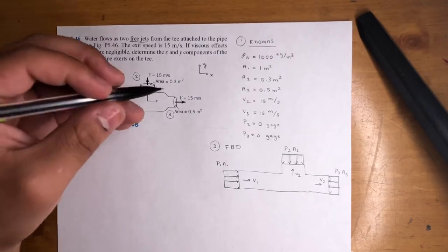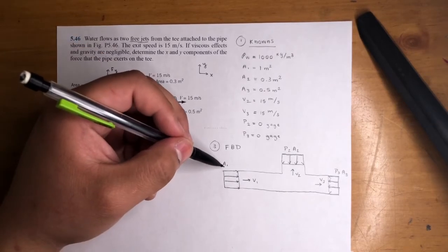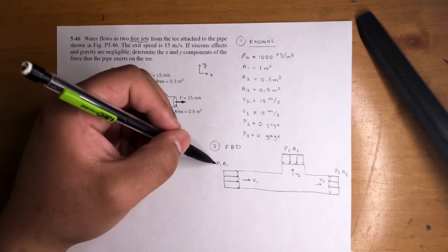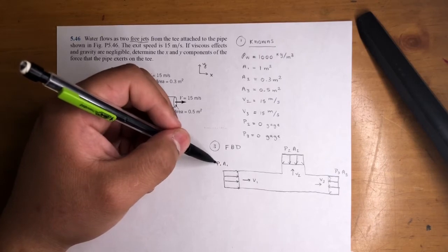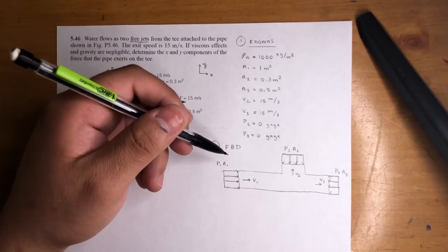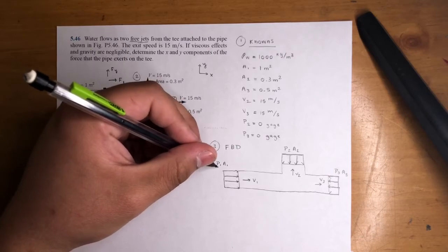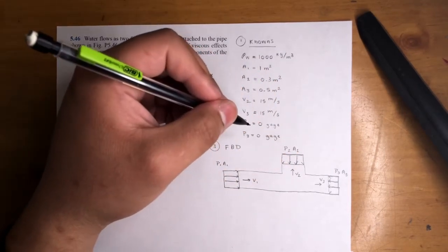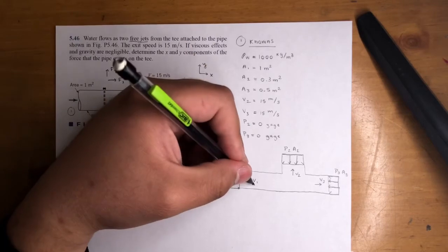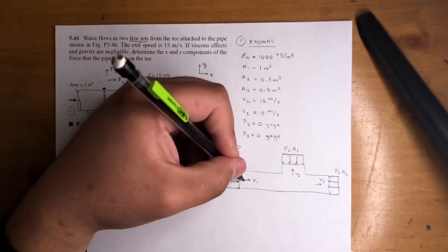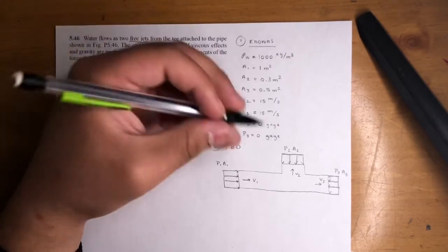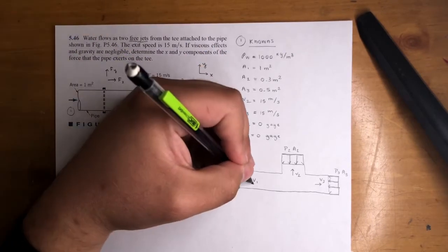We have all the areas, so that's cool. We need P1, because when we do the summation of forces and momentum, we need P1A1. So we need to find P1. We need to find V1 too. We have the two velocities here but not this one. That's about it, just these two.